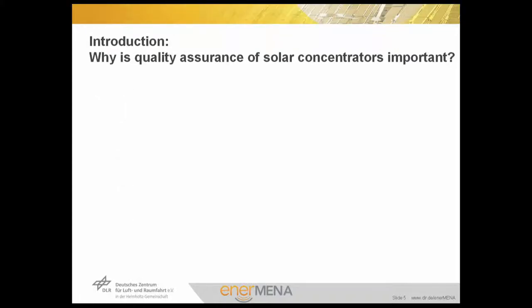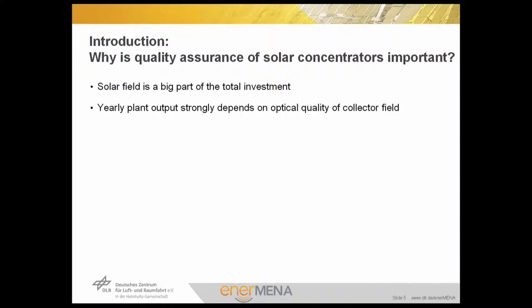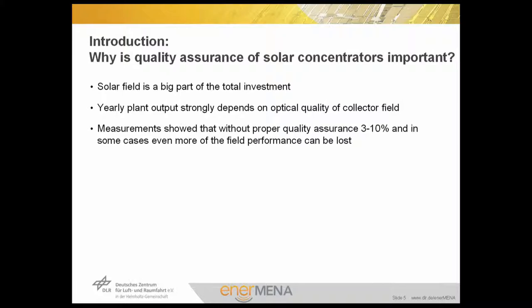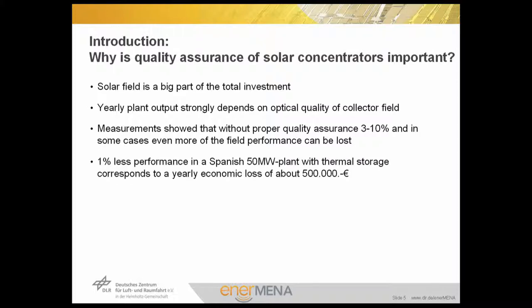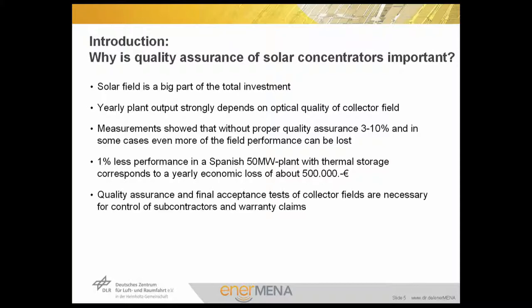As a motivation, we want to know why the quality assurance of solar concentrators is important. For a CSP power plant, the solar field is a big part of the total investment, and the yearly plant output strongly depends on the optical quality of the collector field. Measurements have shown that without proper quality assurance, 3 to 10 percent — and in some cases even more — of the field performance can be lost. An estimation shows that 1 percent less performance in a Spanish 50-megawatt plant with thermal storage corresponds to a yearly economic loss of half a million euros. In addition, quality assurance and final acceptance tests of collector fields are necessary for the control of subcontractors and warranty claims.